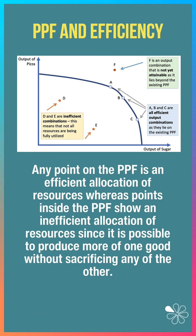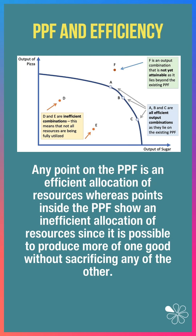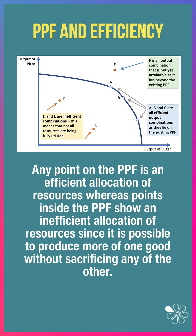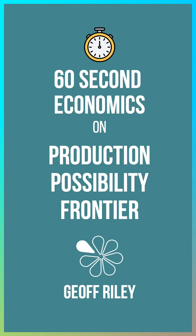Any point that lies on the PPF is an efficient allocation of resources, whereas points inside the PPF — for example, D and E — show an inefficient allocation of scarce resources, since it's possible to use more of one good without sacrificing any of the other. F is an output combination that is not yet attainable, because it lies beyond the existing PPF.